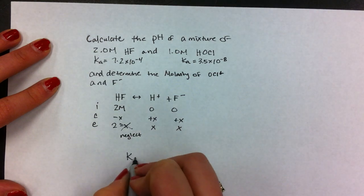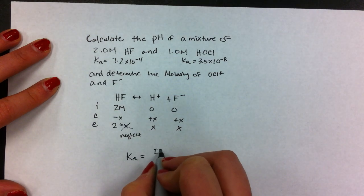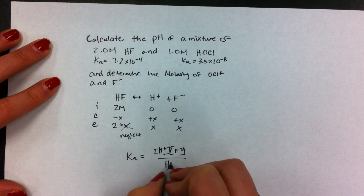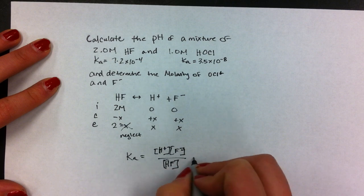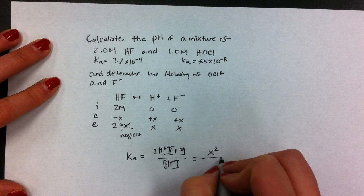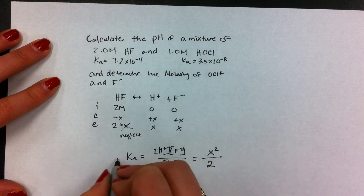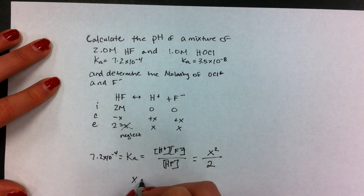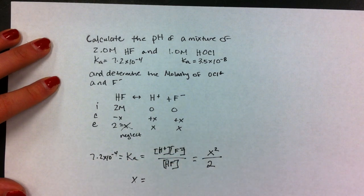The Ka equals H+ times F- over HF. We substitute X squared over 2, and 7.2 times 10 to the negative fourth equals X squared over 2, and solve for X.